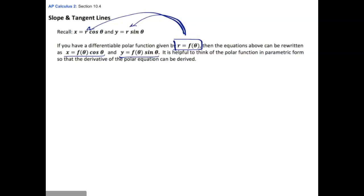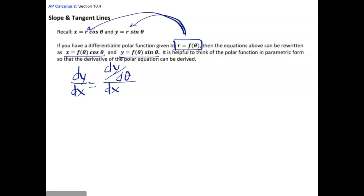The reason that's nice is because we can derive the derivative of the polar equation. We want to find dy/dx, and when you're in parametric form, it's the derivative of y with respect to theta over the derivative of x with respect to theta. That's our parametric form of the derivative.